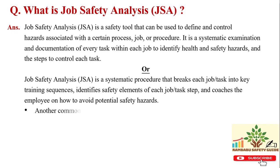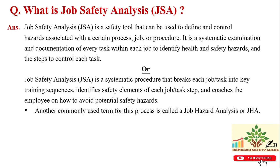Job safety analysis is a systematic procedure that breaks each job task into key sequential steps, identifies the safety elements of each job and task step, and describes how to avoid potential safety hazards. Note that another common term for this process is job hazard analysis, or JHA — both refer to the same thing.